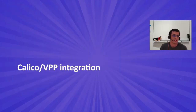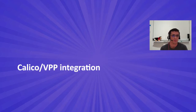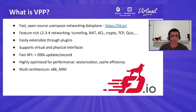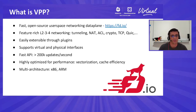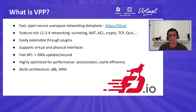Now that we know how Calico works and supports multiple data planes, let's see how we leverage this to add VPP as a data plane option for Calico. VPP is an open-source software router under the Linux Foundation umbrella. It has many features from layer 2 to layer 4 — it supports tunneling, NAT, ACL, but also transport protocols such as TCP, TLS, and QUIC. It's built to be easily extensible thanks to a plug-in architecture and supports both virtual and physical interfaces.